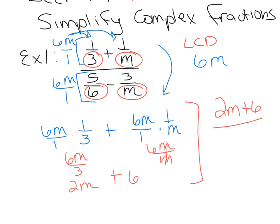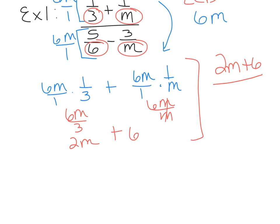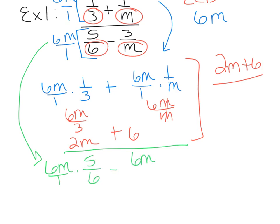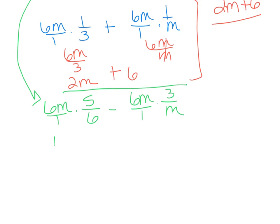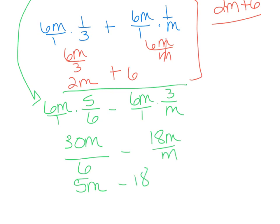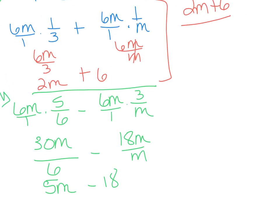Now the denominator: 6M/1 times 5/6 minus 6M/1 times 3/M. Distributing, 6M times 5/6 — the 6's reduce — gives 5M. Then 18M over M — those M's reduce to make 18. So the denominator turns out to be 5M minus 18.